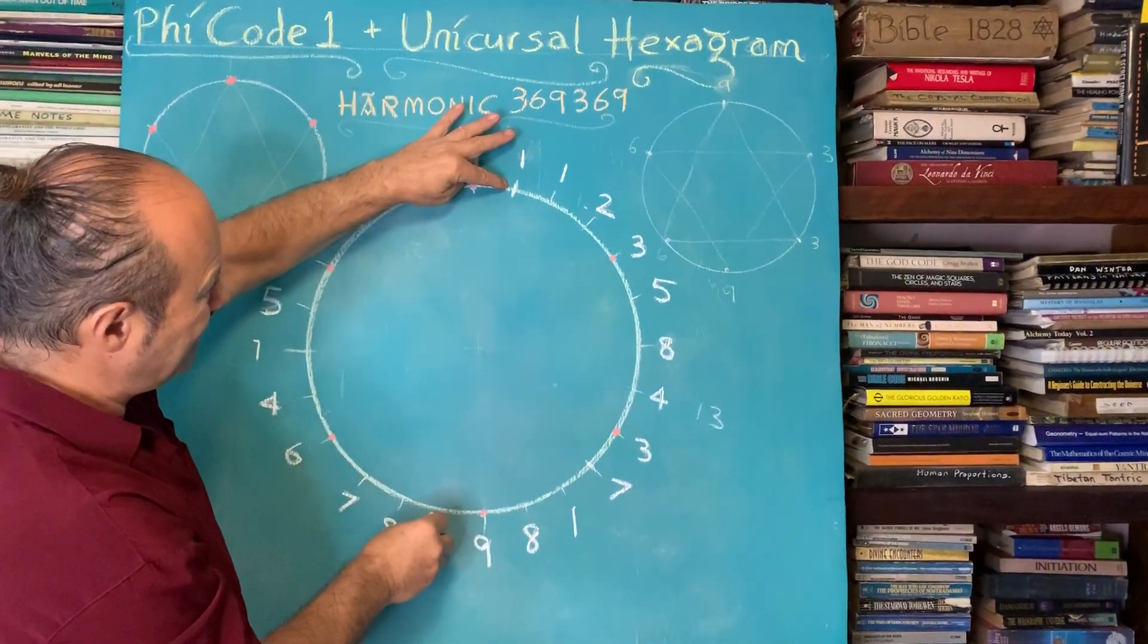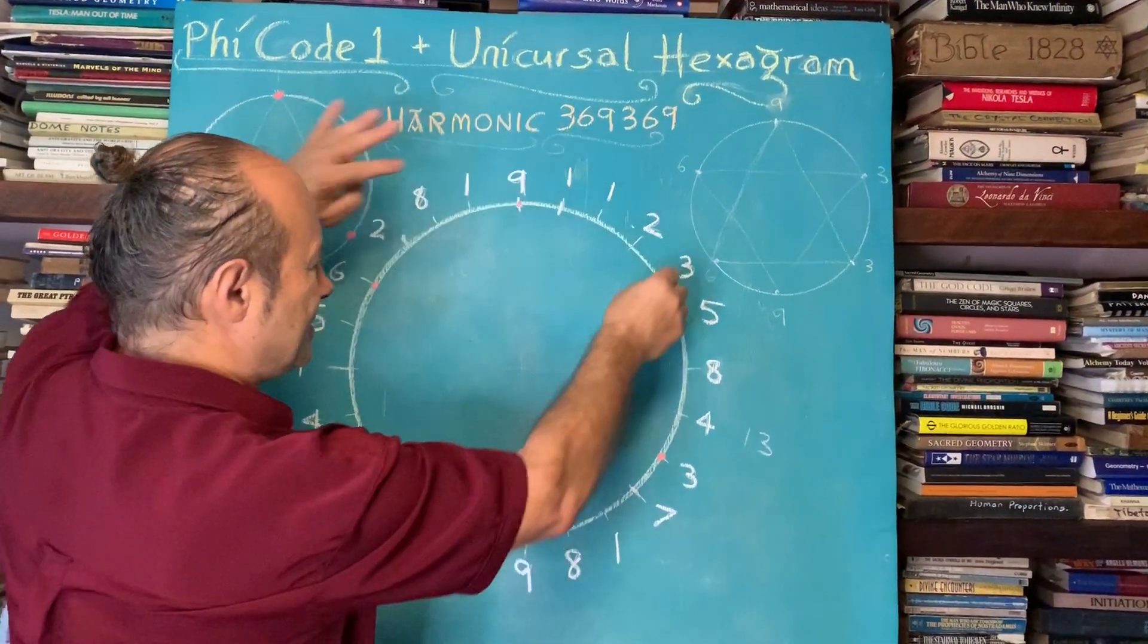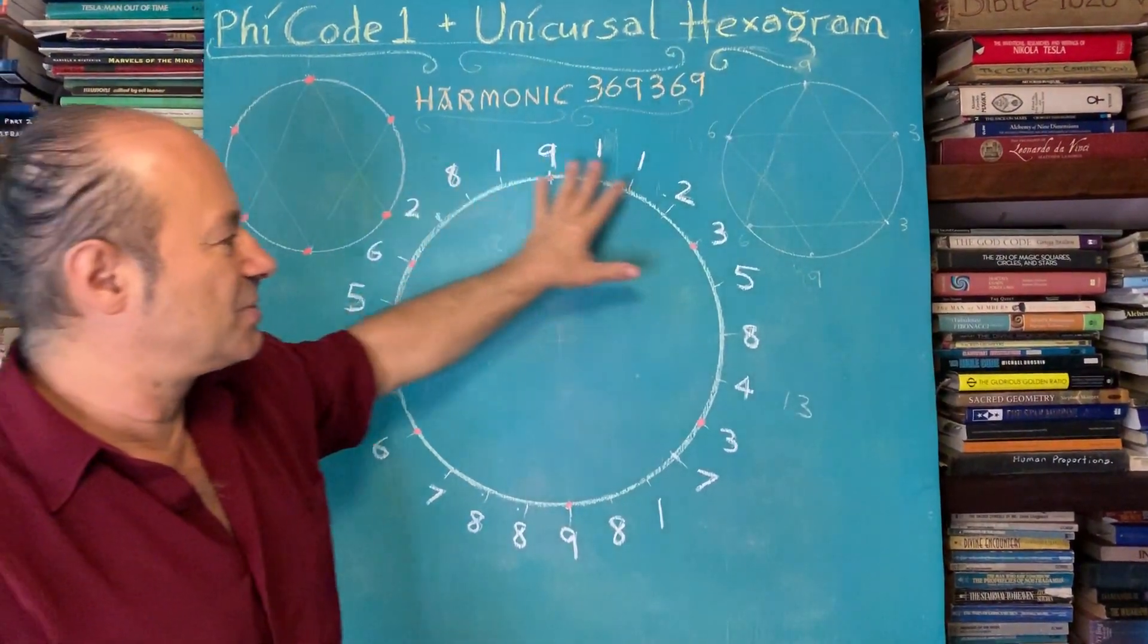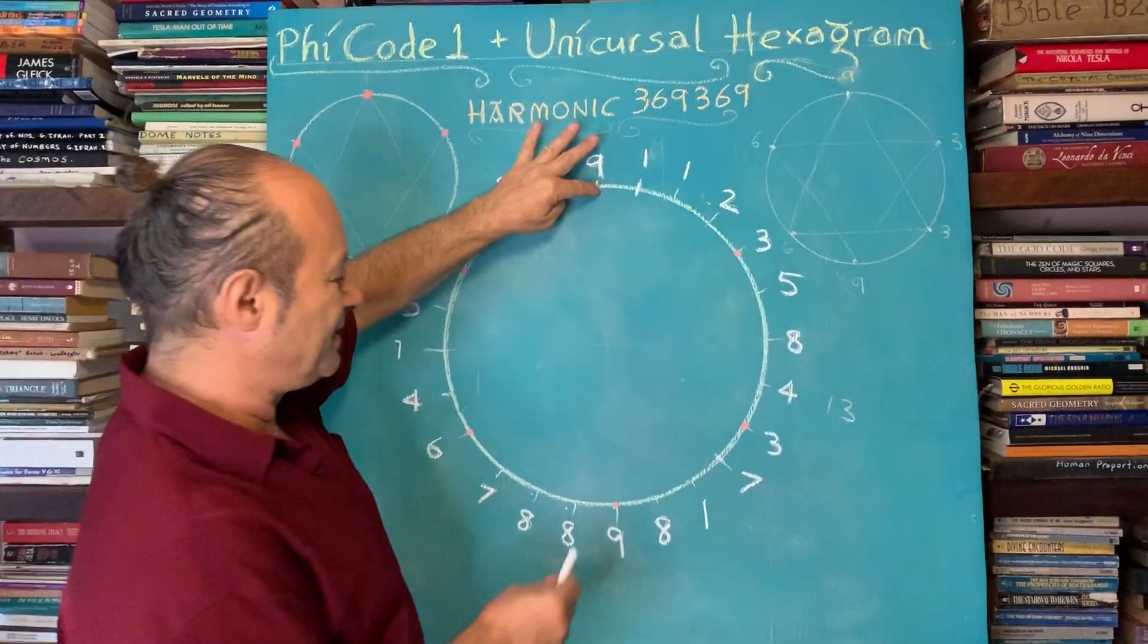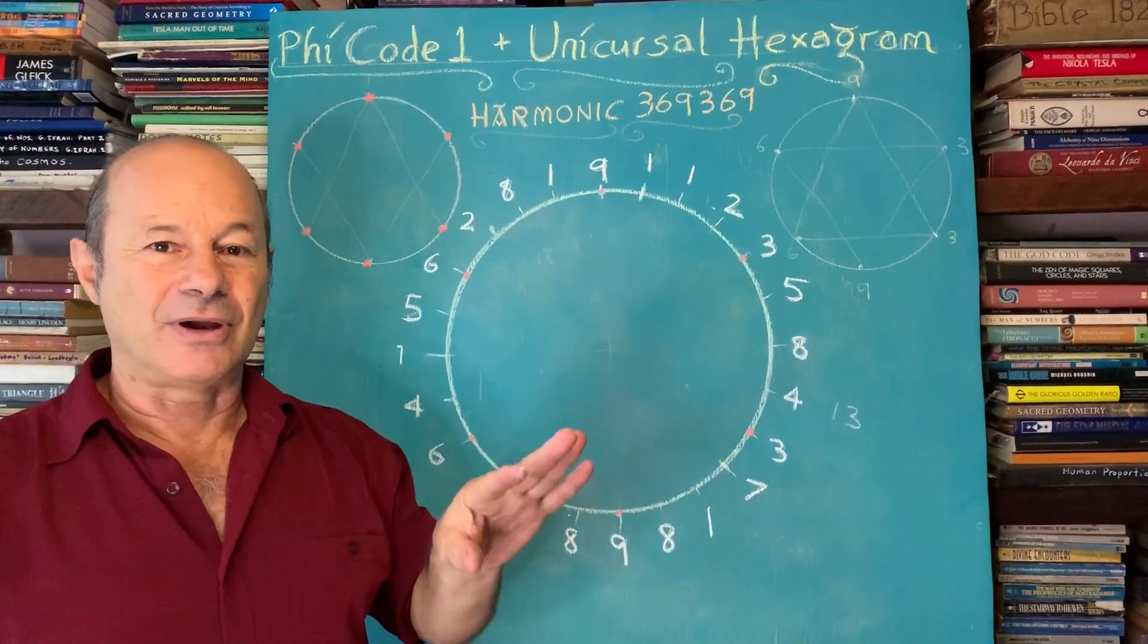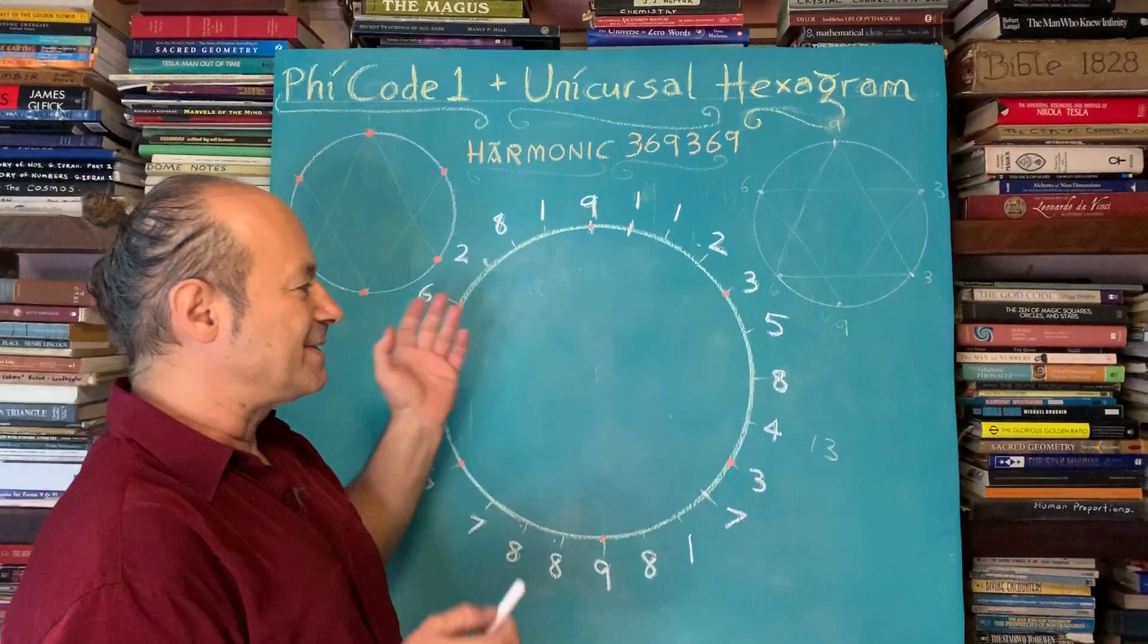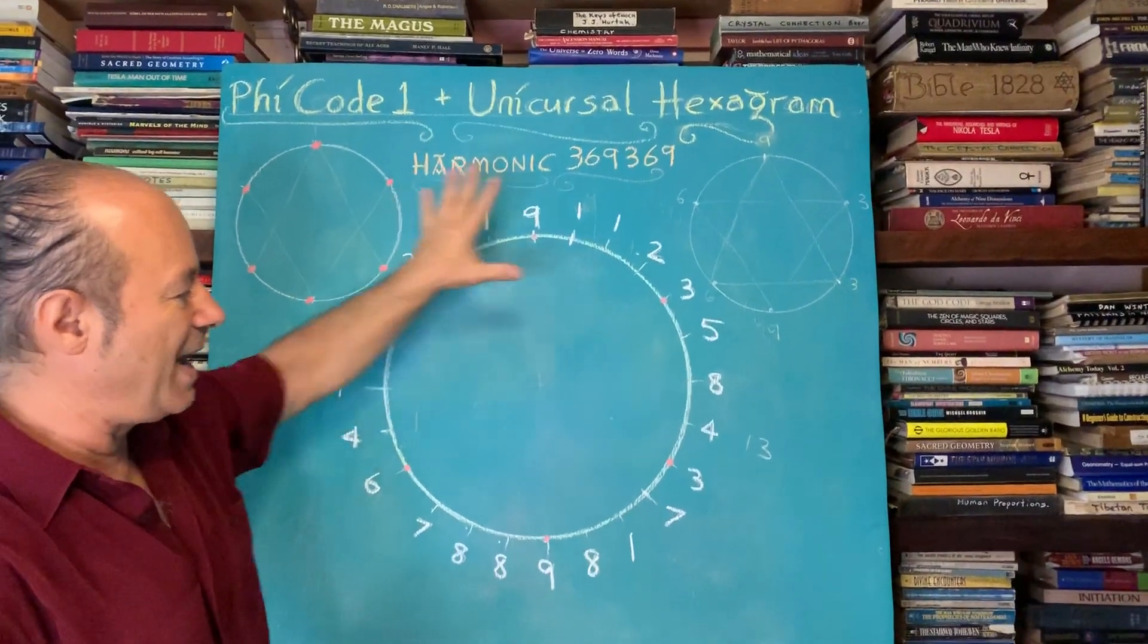If you notice, at the zenith and the nadir, we both have a 9 and a 9. Besides the repetition of the 9s, if you take any number, like 1 and 8 is 9, 2 and 7 is 9, 3 and 6 is 9, they're called diametrically opposite or polar numbers. So it's 12 pairs of 9.